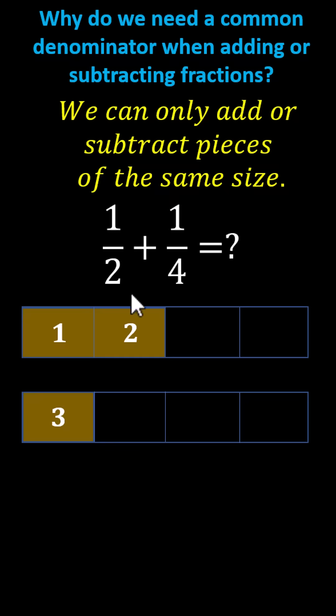Mathematically, to write one-half as an equivalent fraction with the denominator of four, we multiply by two-halves or two over two. Notice two divided by two is equal to one, so we're not changing the value of the fraction, just the form, giving us an equivalent fraction with the denominator of four.